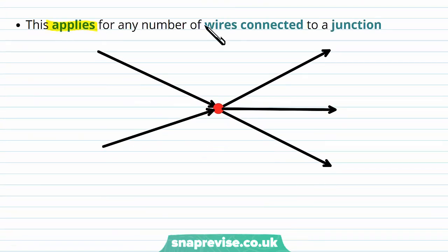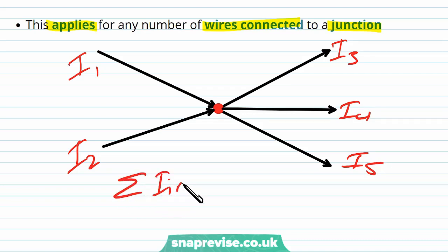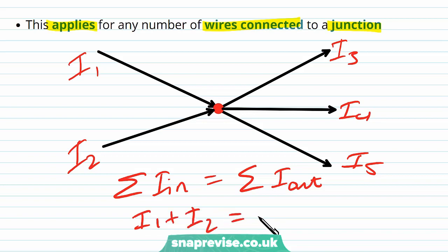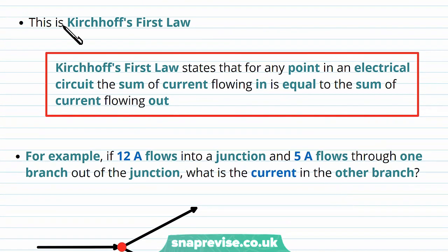This applies for any number of wires connected to a junction. For example, we might have two currents coming in, i1 and i2, and the junction splitting into three branches with i3, i4, and i5. The sum of current going in — i1 plus i2 — must equal the sum of current going out — i3 plus i4 plus i5. This is Kirchhoff's first law, which states that for any point in an electrical circuit, the sum of current flowing in is equal to the sum of current flowing out.